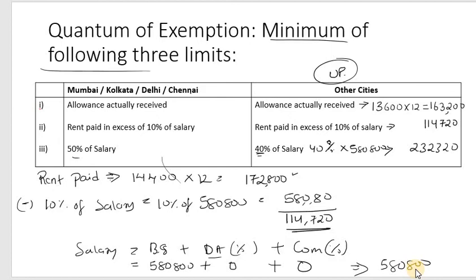The minimum of the three computed HRA limits is taken as the exempt amount. This is the final exempt HRA figure to be deducted from gross salary.